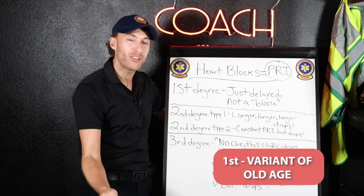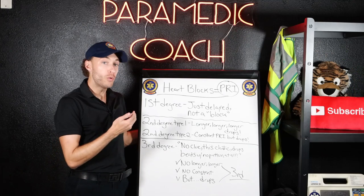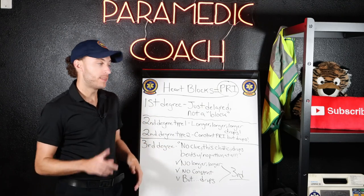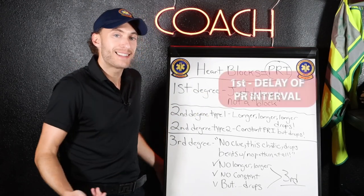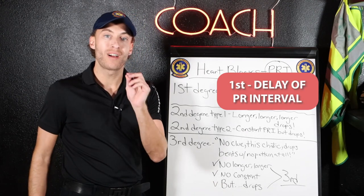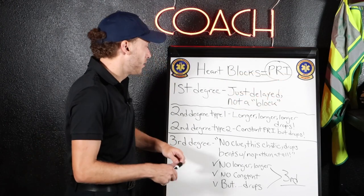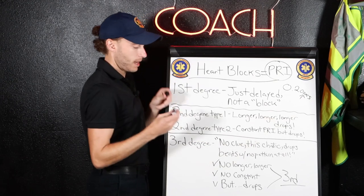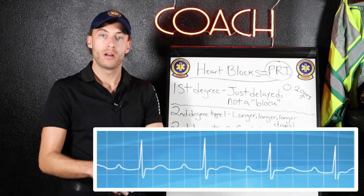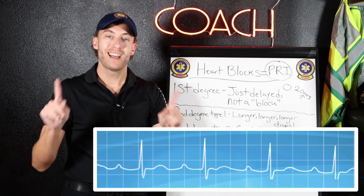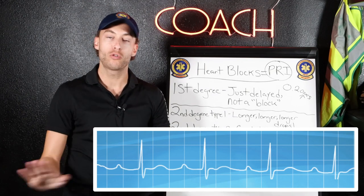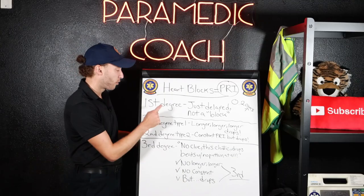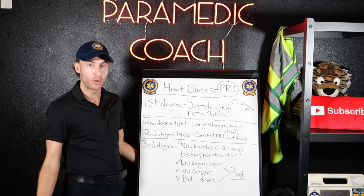The first degree heart block is just a variant of old age — that's all it is. You'll see it multiple times throughout your career, usually in elderly patients, and they're fine. The first degree heart block is not an actual block — it's more of a delay of the PR interval. All this is: you notice the PRI is over 0.20 seconds. There are no dropped beats; every single QRS has a P wave with it. The only thing abnormal is the PR interval is a little too long. Nine out of ten times, it's a benign variant of old age.